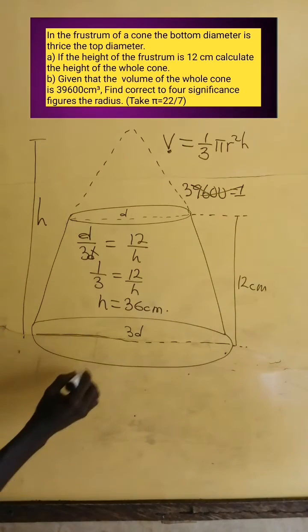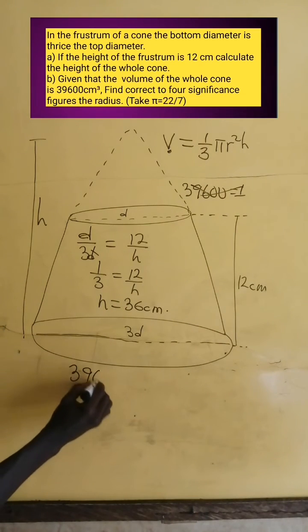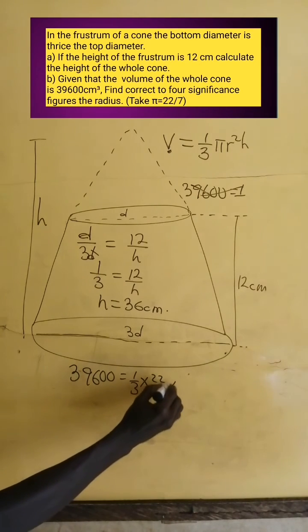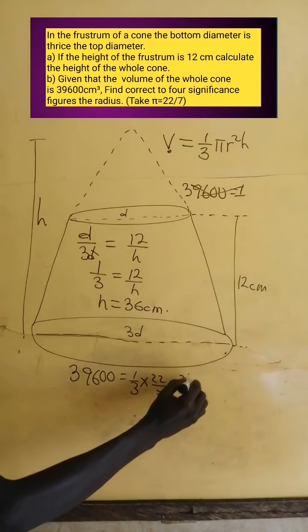Let's use this part. We have 39,600 equals one-third times pi, which is 22 over 7, times R squared times H, and H is 36 centimeters.